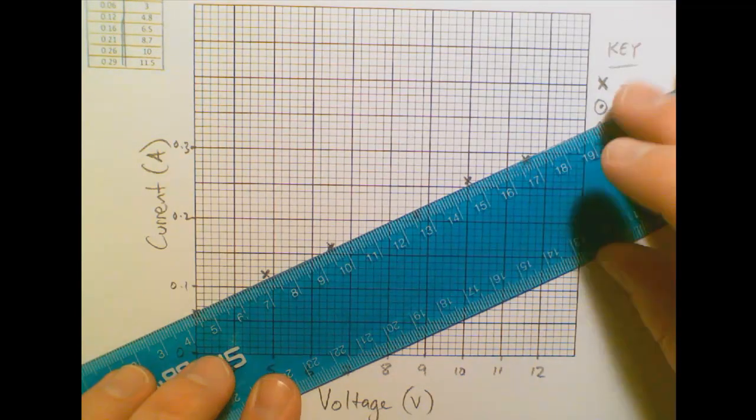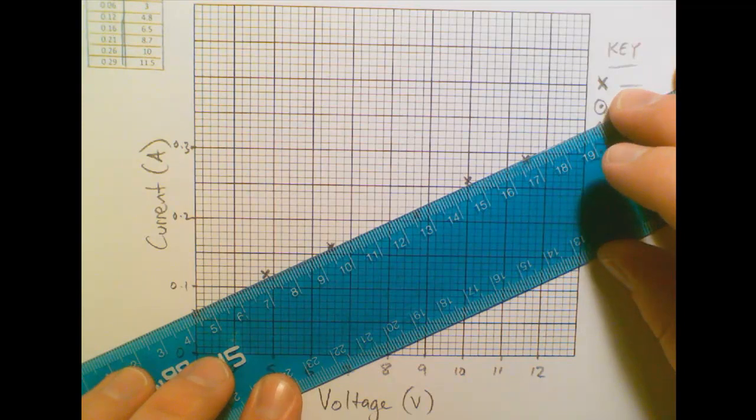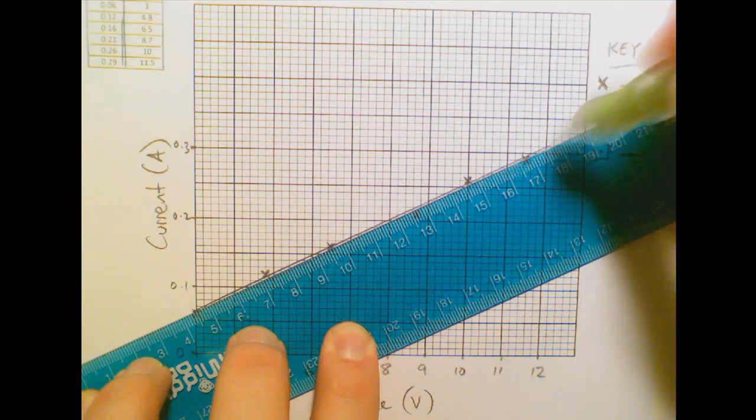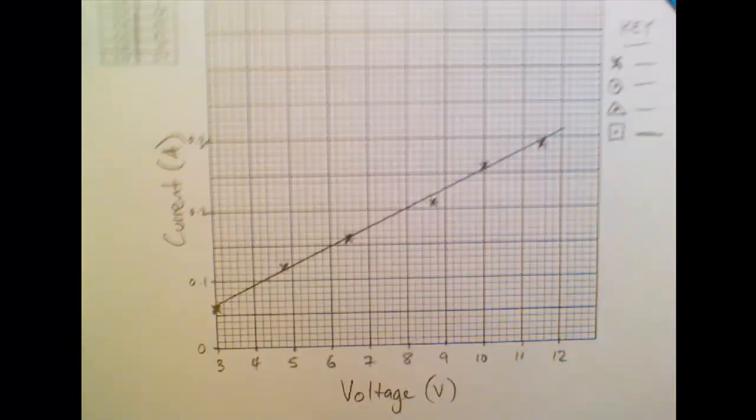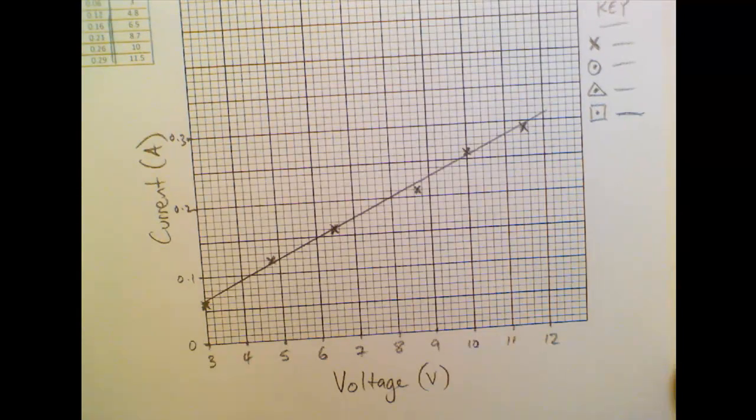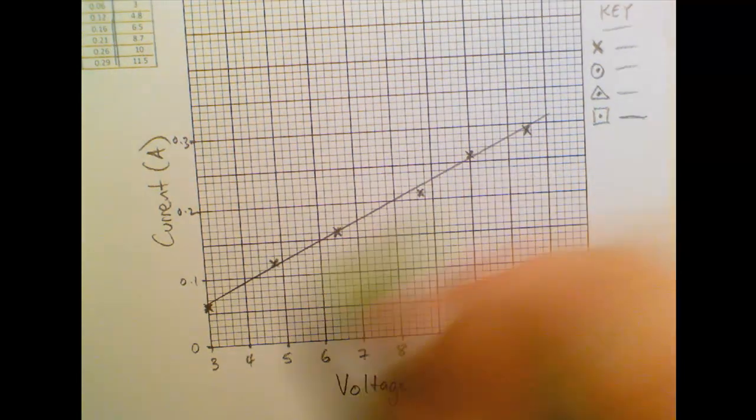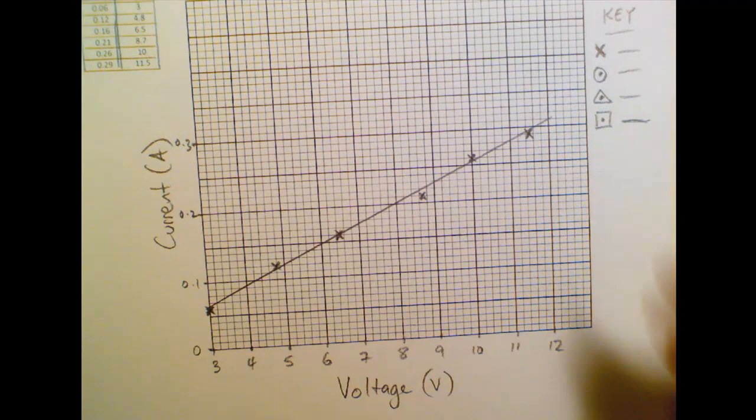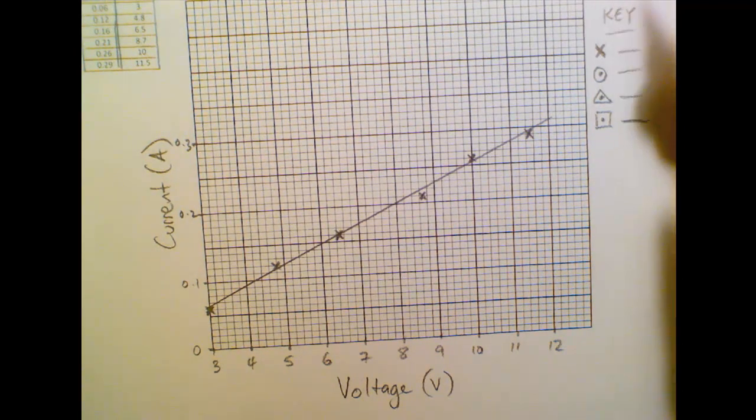And it looks maybe somewhere there would be pretty good. So I'm going to draw my line through here. It's good to have a ruler that's see-through. It makes it easier. And there I've got 2 on that side and 1 under the line and 3 on this side. So that's close enough. It is a bit difficult.